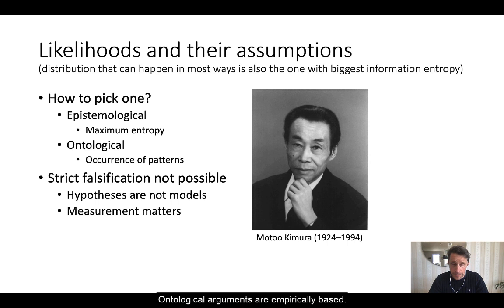Ontological arguments are empirically based. For example, if we have integers, a count going from zero to infinity, then we often model this natural phenomena using a Poisson distribution.